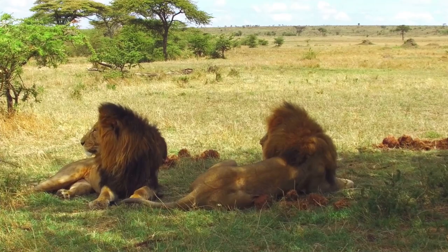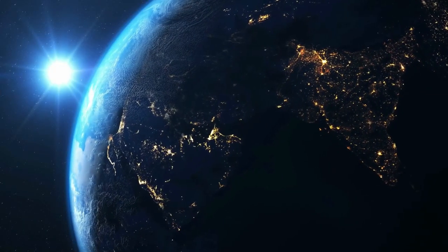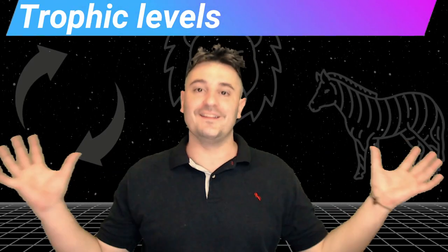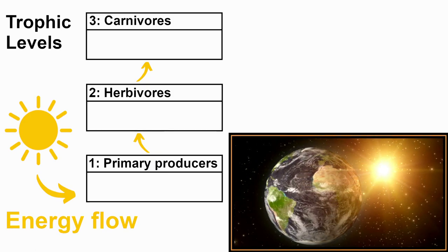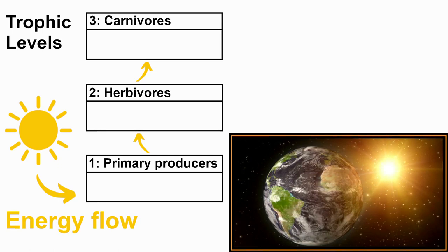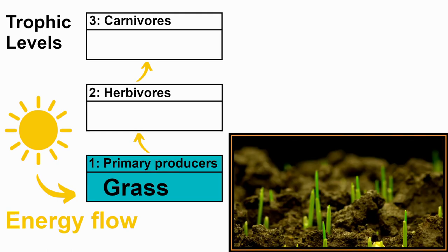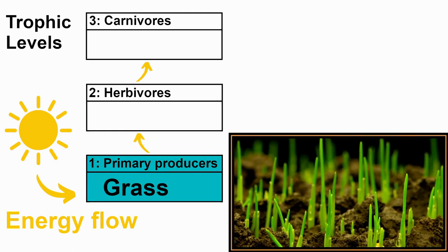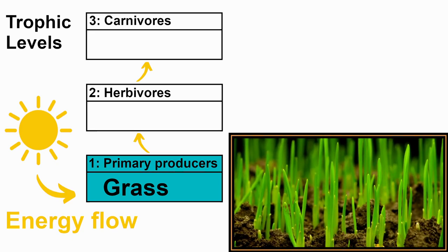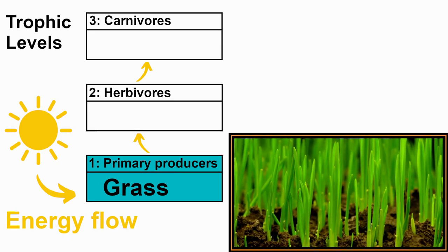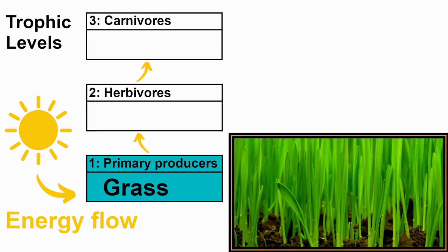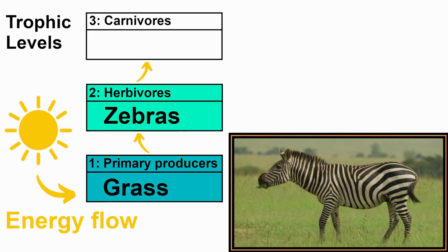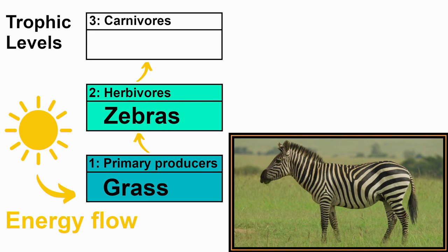How do the lions ultimately get their calories from the sun? We need a basic understanding of trophic levels. All life requires energy of some sort. Trophic levels explain how energy moves up the food chain in an ecosystem. The first level uses photosynthesis to capture energy from the sun and convert it to organic biomass. In the savannah ecosystem, grass is our primary producer.